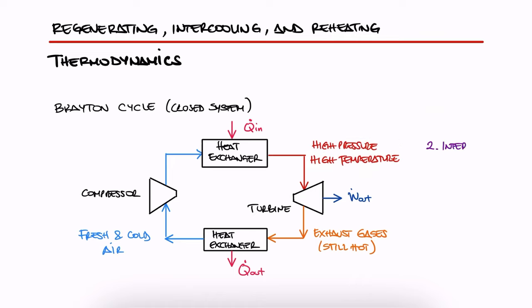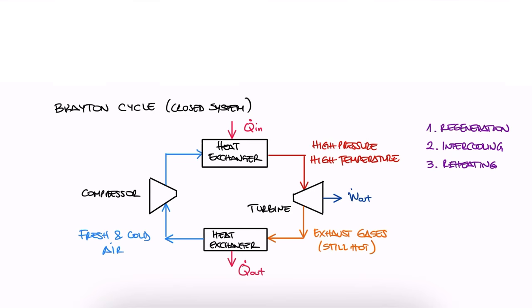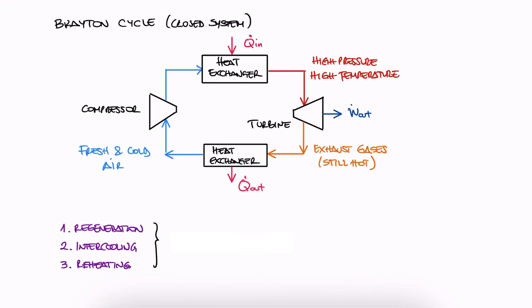In that video, we briefly discussed how intercooling, reheating, and regeneration could help bring up the usually poor efficiency of Brayton cycles. You can check the 3 minute example videos of that lecture where we calculate some efficiency values if you haven't already. The links are down below.